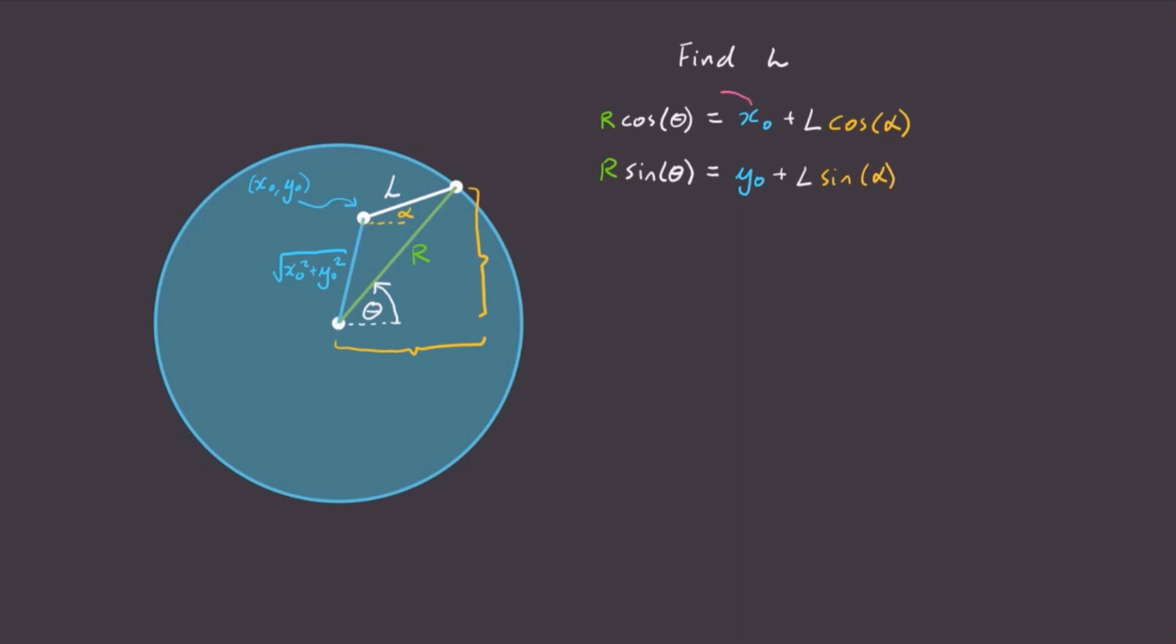Now we want to solve for l. So let's move x0 and y0 to the other side of the equation. That way, when we square equation one and equation two, we'll get rid of that pesky alpha term.